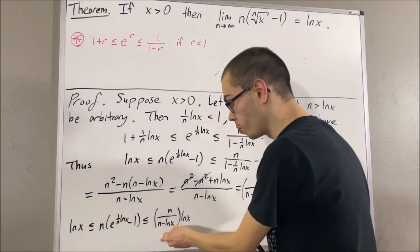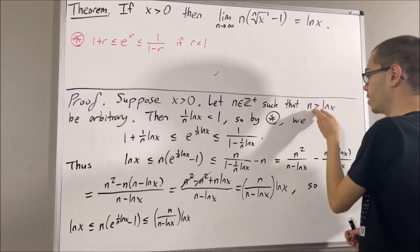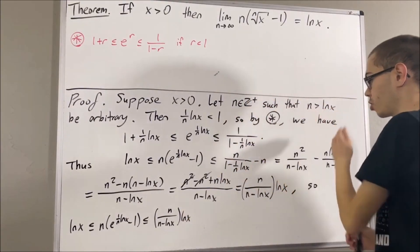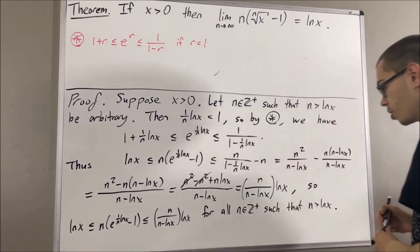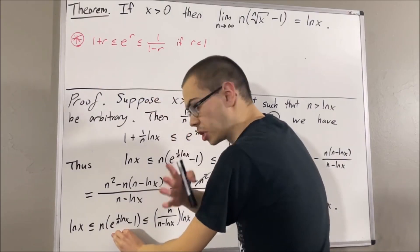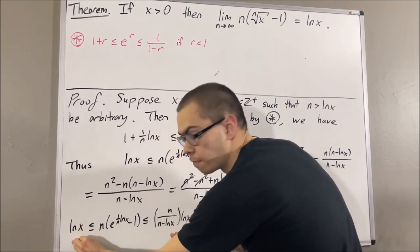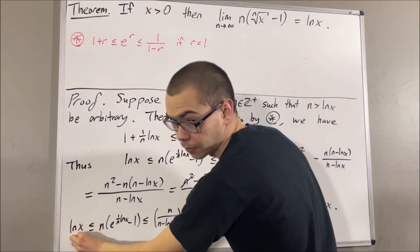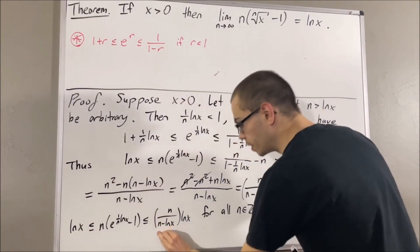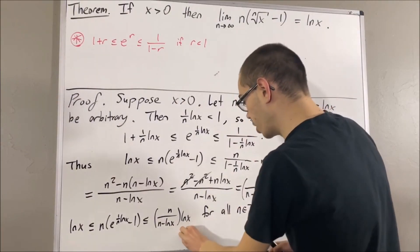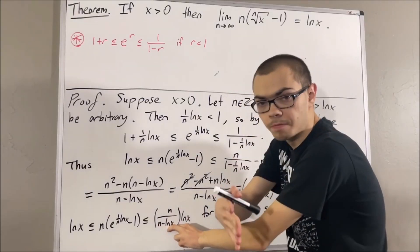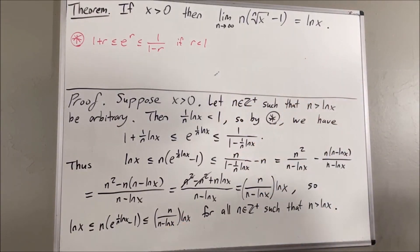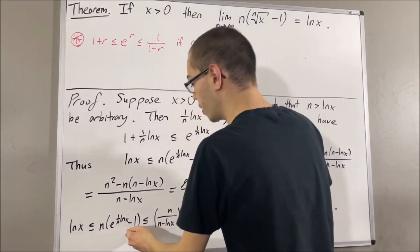We have proven that this inequality is true for an arbitrary positive integer n such that n is greater than natural log of x, so it holds for all such n. In other words, this sequence is eventually squeezed between two other sequences which converge to the natural log of x. The left sequence is a constant sequence where every term is natural log of x, so it clearly converges to natural log of x. The right sequence also converges to natural log of x, because the sequence n over (n minus natural log of x) converges to 1, so it converges to 1 times natural log of x. Therefore, by the squeeze theorem, this sequence converges to the natural log of x.